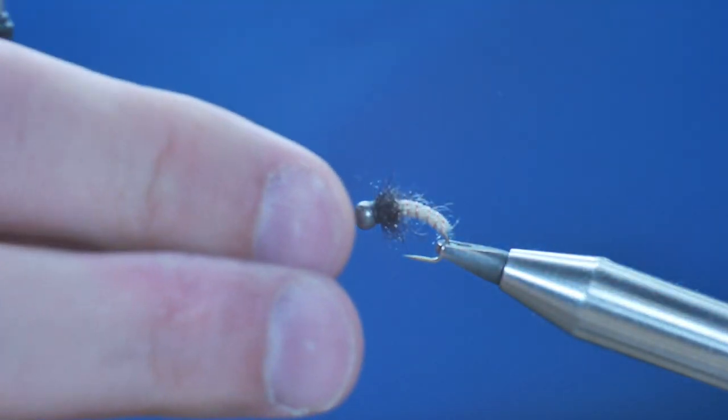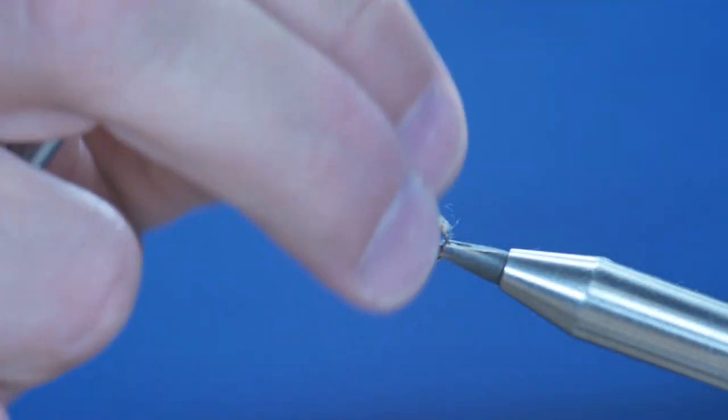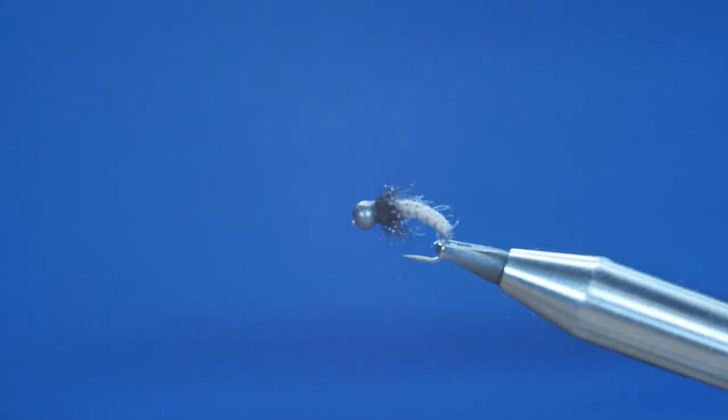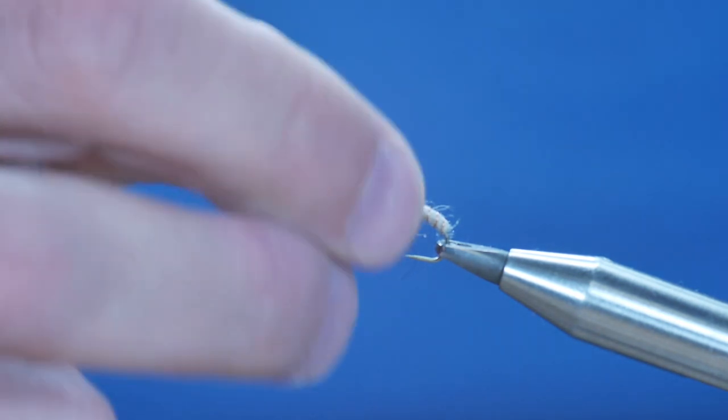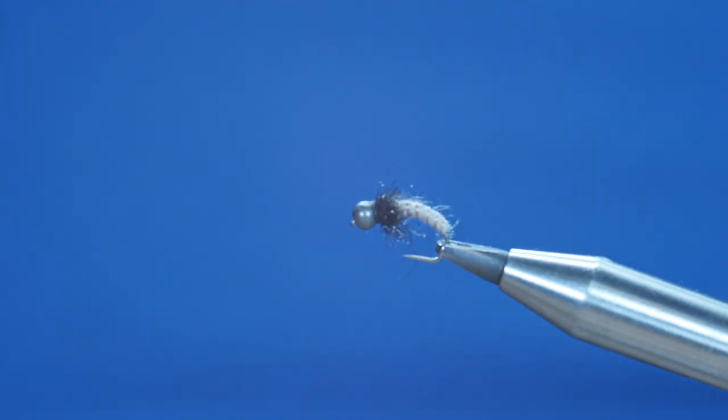I would recommend ripping it away with your fingers rather than coming in with scissors, so you end up with that more natural look. And that goes really well because of the 3.3 millimeter bead. It will get down in little holes that lighter flies may not be able to. Thanks very much for watching.